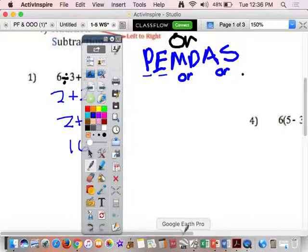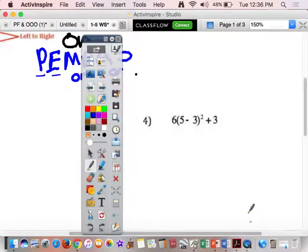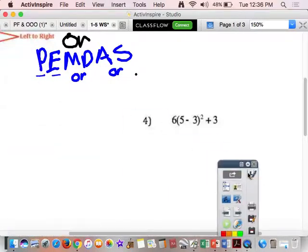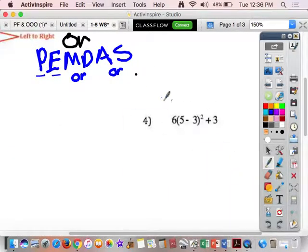Alright, now let's do another one. Okay. So, let's do 4. We'll do 4 here. Alright. So, do I have, I go back, start with P, parentheses. Alright, I have some parentheses. I'm going to do that first. So, it's 6 times, and 5 minus 3 is 2. I'm rewriting it. 2 squared plus 3.